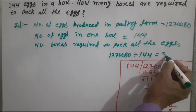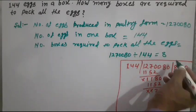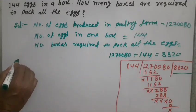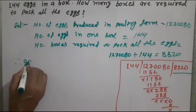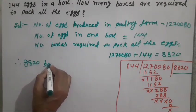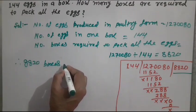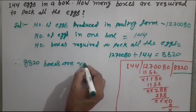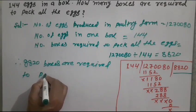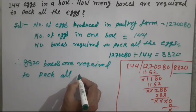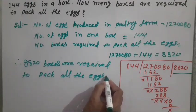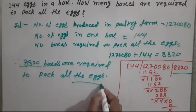This is the answer: 8,820. Therefore, 8,820 boxes are required to pack all the eggs. This is the total number of eggs divided by the number per box.